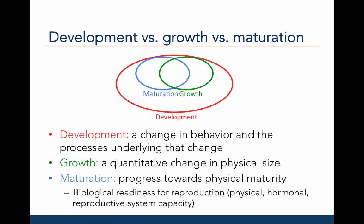Recall our definition of development, growth, and maturation from Lecture 1. Development is a change in behavior and the process underlying that change. Growth is a quantitative change in physical size, for example, height, weight, or the relative weight and height of different body parts. Maturation is the progress towards physical maturity, and specifically, it is the biological readiness for reproduction in terms of physical, hormonal, and reproductive system capacity. As we have discussed before, two children of the same age could vary drastically in their physical maturity. And in many of the figures and charts, we have used age as a proxy or approximation of physical maturity. Now we will discuss what we mean by maturation specifically.